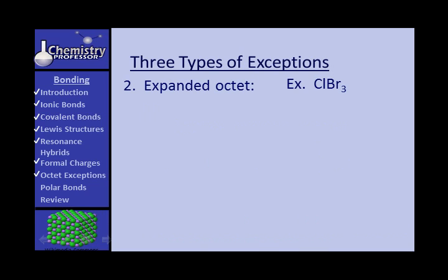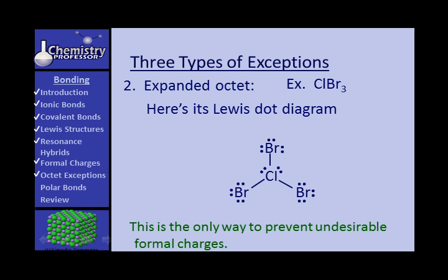The second type of exception is the expanded octet. We'll use chlorine tribromide as our example. Its Lewis dot diagram shows ten electrons around the chlorine — that looks strange, but it's the only way to prevent undesirable formal charges. We'll discuss its geometry in the next unit.